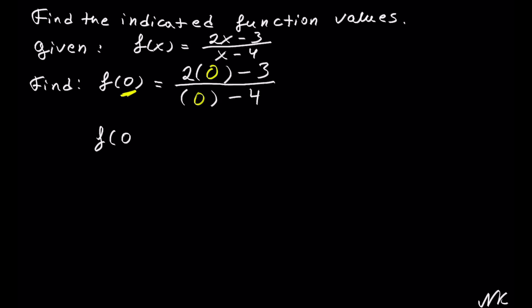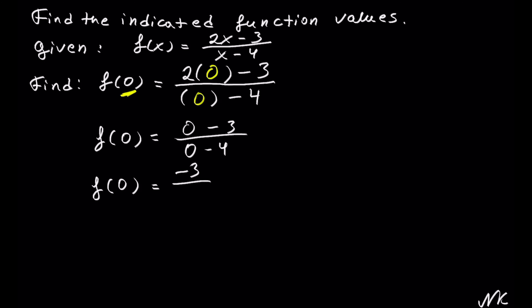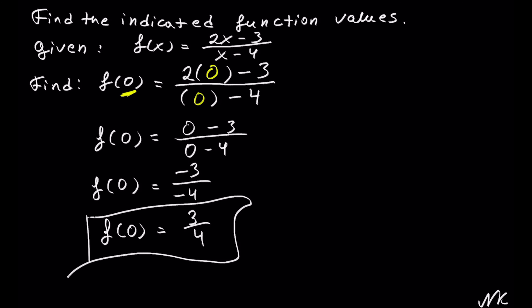We get f of 0 is equal to 2 times 0 is 0, minus 3, out of 0 minus 4. This simplifies to negative 3 out of negative 4. Negative divided by negative gives a positive, so f of 0 is equal to 3 out of 4. And this is our solution.